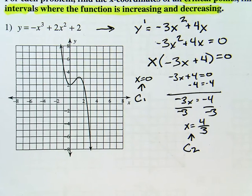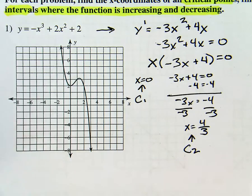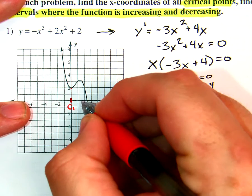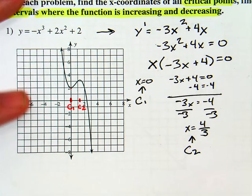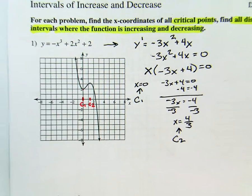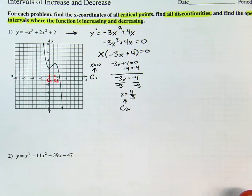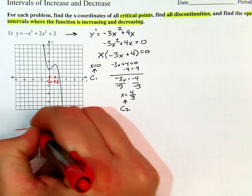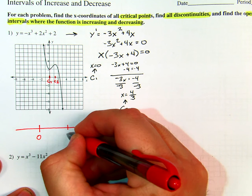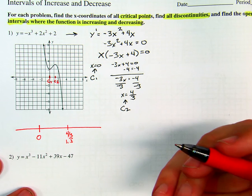So on the graph, I know c1 is at zero and c2 is at 4 thirds — which is right here. That's going to tell me, when I apply the first derivative test to find the intervals where we're increasing and decreasing. I'll have a zero and a 4 thirds, which is 1.3 repeating — that might help when we're figuring out test points.